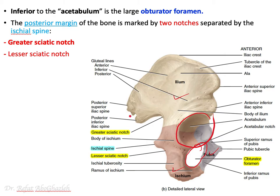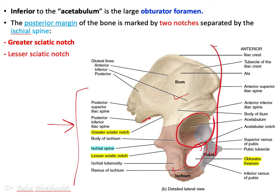Looking at the anterior and posterior borders of the hip bone, you will notice two notches on the posterior margin, one large and one small, separated by a small spine protruding from the ischium called the ischial spine. The presence of the ischial spine creates the greater sciatic notch and the lesser sciatic notch, through which a couple of structures pass.